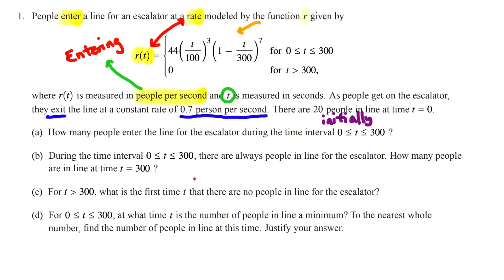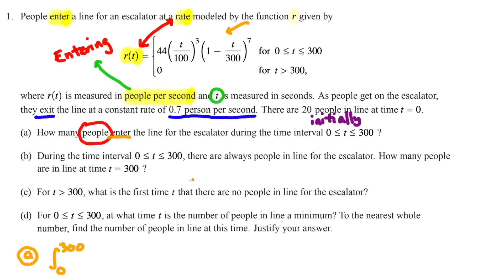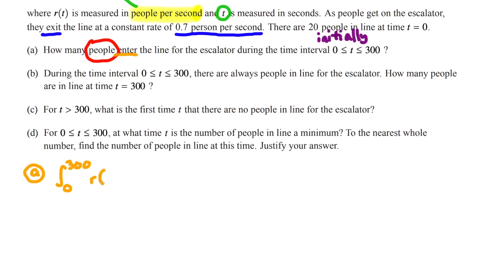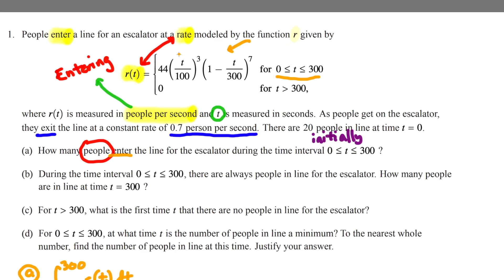For part A, it asks how many people enter the line from time zero to 300. The key word is 'people,' not a rate — so we need an integral. We set up the integral from 0 to 300 of R of T, DT. You don't have to write out the full piecewise expression; just writing R of T is acceptable and still earns points.